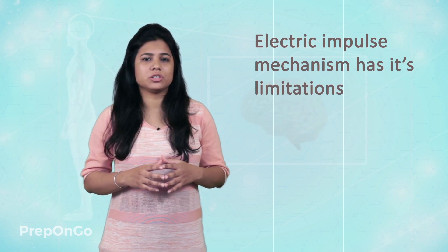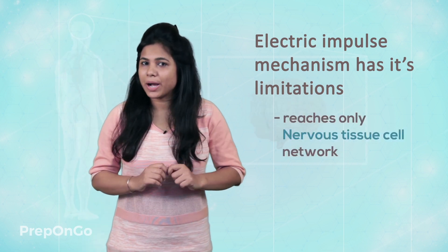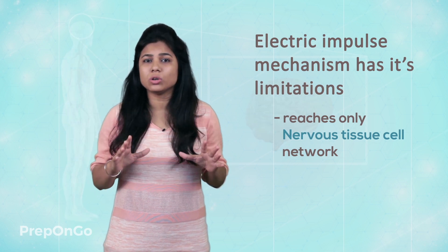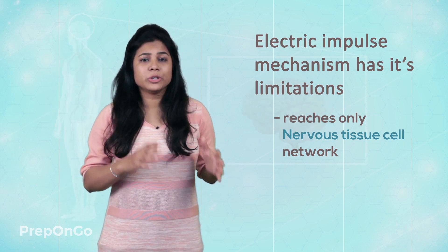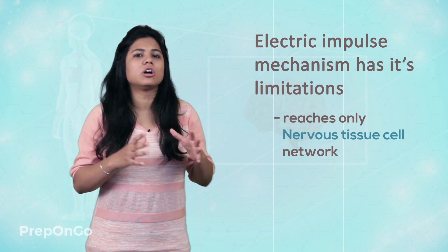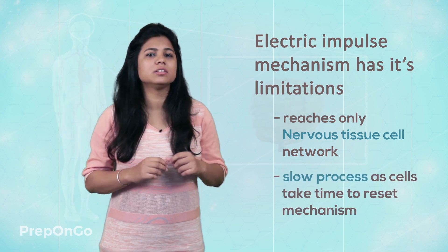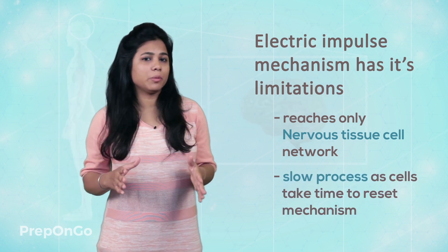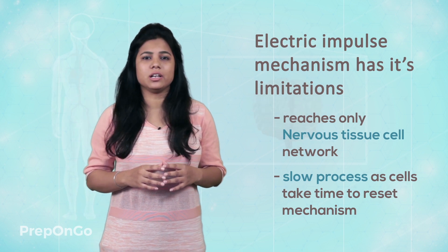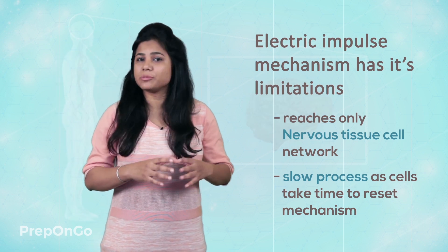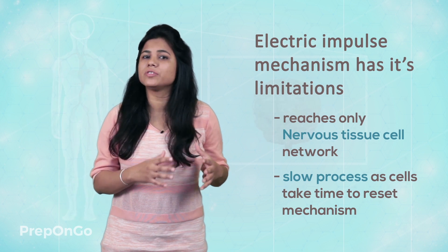What are its limitations? Firstly, the electrical impulses are transmitted to only those cells which are connected to nervous tissues, which means that if a cell is not connected to nervous tissue, it will not receive the information. Second, when information is transmitted to a cell, it will take some time to reset its mechanism for generation of the next impulse, making it time consuming. Therefore, cells cannot continuously create and transmit this electrical chemical information.